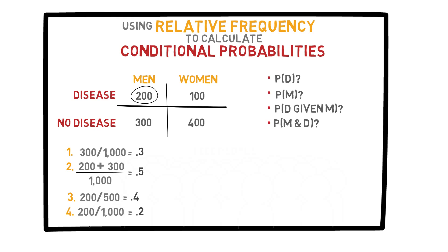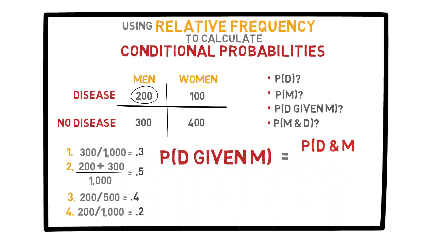In the previous video, I gave you a formula for conditional probability. In this case, the formula would be: the probability of D given M is just the probability of D and M divided by the probability of M. Let's check to see if the formula is valid here. As we saw, the probability of D and M — or M and D — is just 0.2, and the probability of M is just 0.5. 0.2 divided by 0.5 is just 0.4, which matches the value we determined earlier in this video.